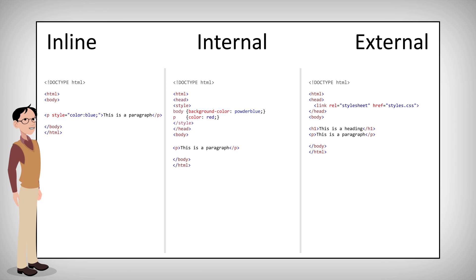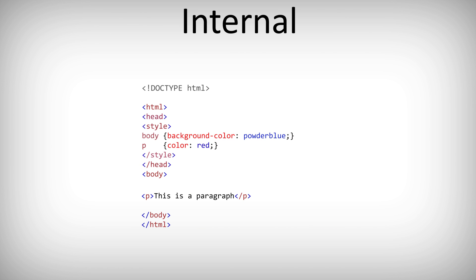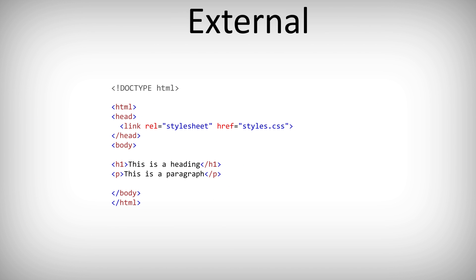There are three ways to add CSS to HTML elements. First, there's inline, which is done by using the style attribute in HTML elements. The second is internal, which is completed by using a style element in the head section. Lastly, there's external, which means using an external CSS file.